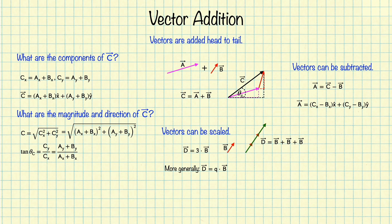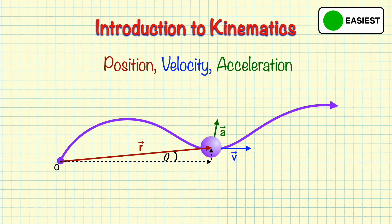Now that we know what vectors are — they're just arrows — and we know how to do basic operations with them, we can move on to physical quantities that are represented as vectors: specifically position, velocity, and acceleration. These are the three fundamental quantities of kinematics, and they are all vectors — they have a length and they point in some direction. If you found this video helpful and would like to see more kinematics and physics tutorials, please like and subscribe and click the bell to be notified of future physics videos. If you have any questions, leave them in the comments section — I'll do my best to answer them. Thanks for watching, and I'll see you in the next one.